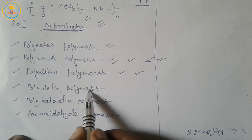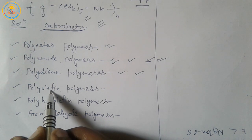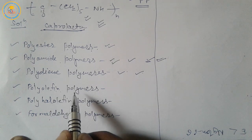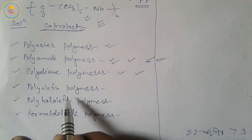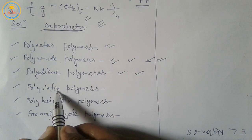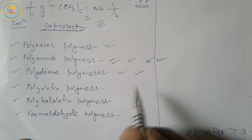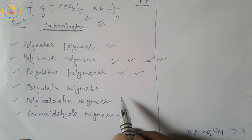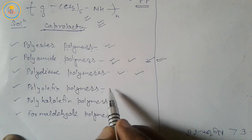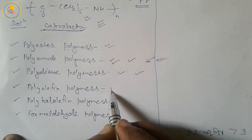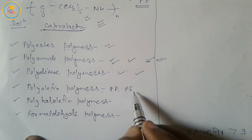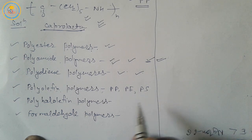Next, polyolefin polymers. 'Poly' means many; 'olefin' means double bond. We discussed olefins in class 11, chapter 13, hydrocarbons. Alkenes are known as olefins because they combine with halogens and form oily substances. Examples of polyolefin polymers are PP (polypropylene), PE (polythene), and PS (polystyrene).